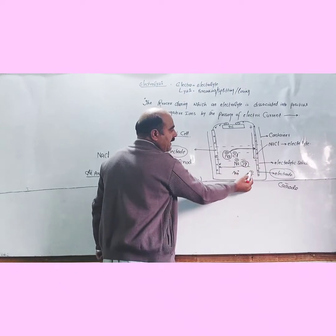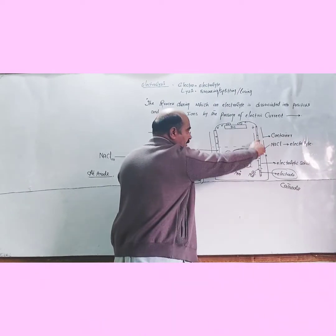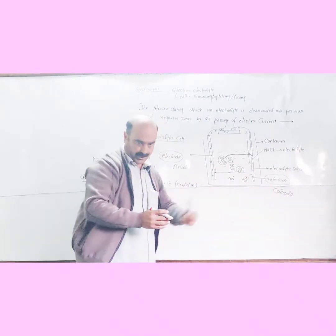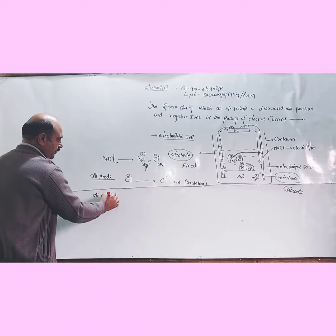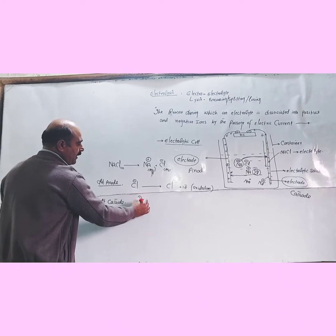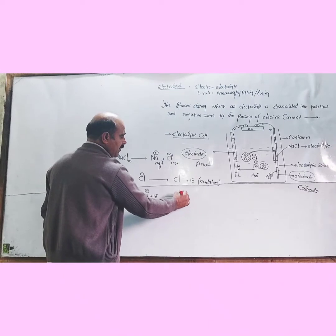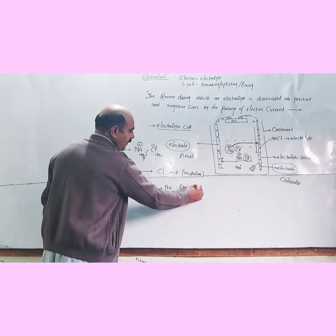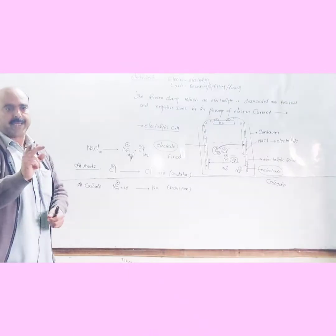At the cathode, positive cations (sodium ions) gain electrons. The gain of electrons is called reduction. So at the anode, oxidation takes place, and at the cathode, reduction takes place.